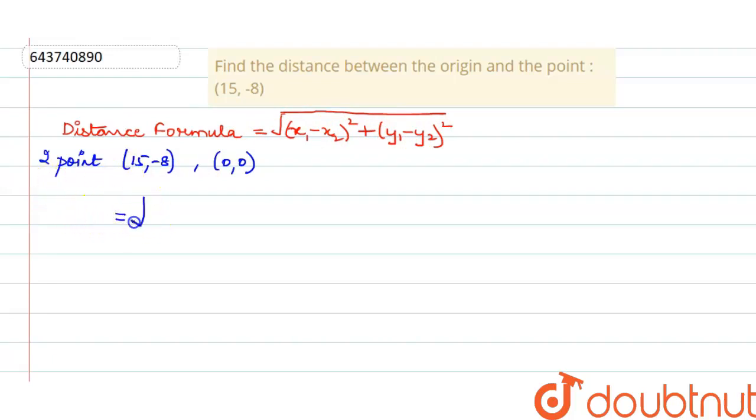So the distance will come out to be from here, so x1 is 15 minus 0 square plus here it is minus 8 minus 0 square. So from here when we solve that this will come out to be 15 square plus this will come out to be 8 square. Since squaring of minus will change it so there is no difference.